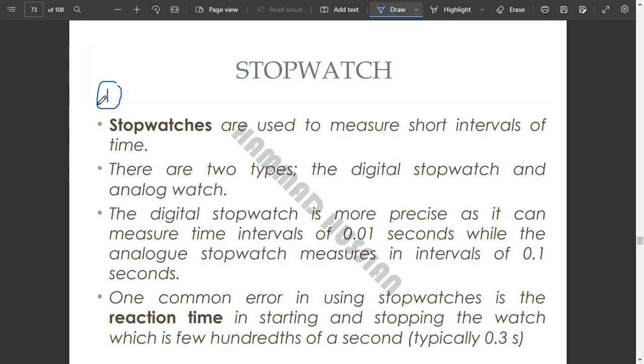Stopwatches are used to measure short intervals of time. There are two types: the digital stopwatch and the analog watch. The digital stopwatch is more precise as it can measure time intervals of 0.01 seconds, while the analog stopwatch measures in intervals of 0.1 seconds.